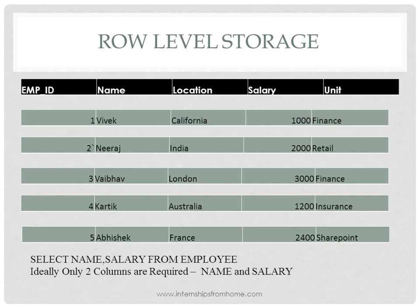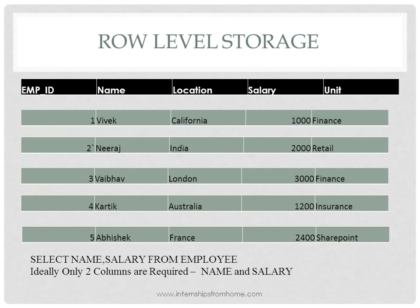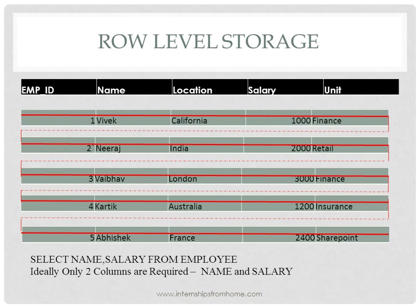Now consider a query where we want to select only two columns from the employee table. If you run SELECT name, salary FROM employee, ideally only those two columns should be retrieved. But that is not how row level storage works. Since all columns of a row are stored together, it will access all columns for each row even though we only need two. The challenge is that we are accessing additional columns that aren't required, so performance will be slow because we're reading more data from the disks.